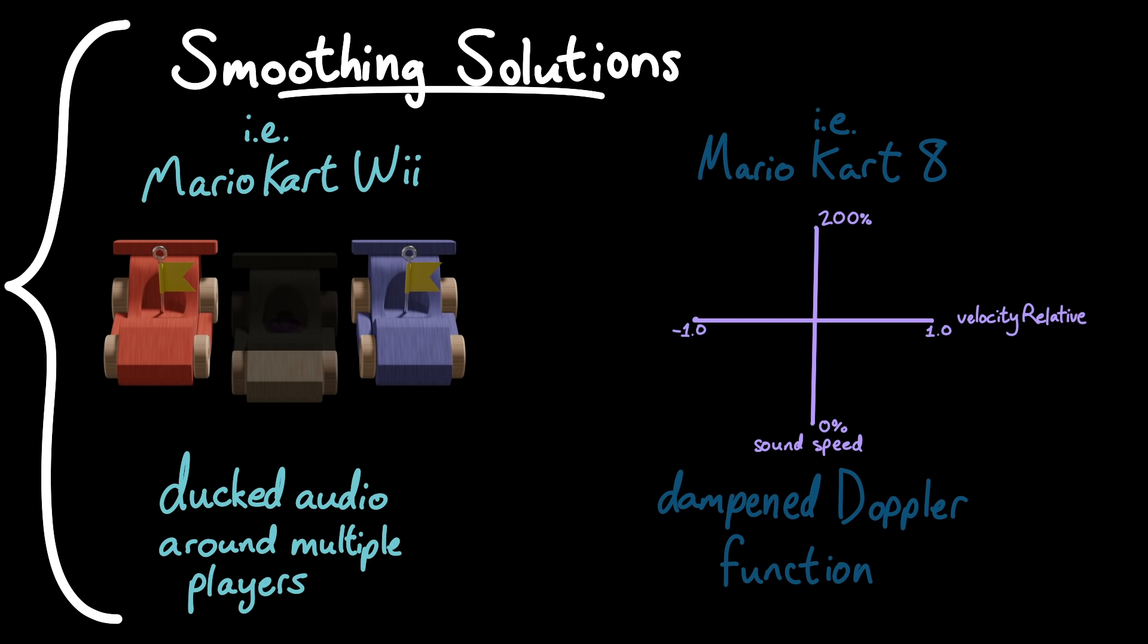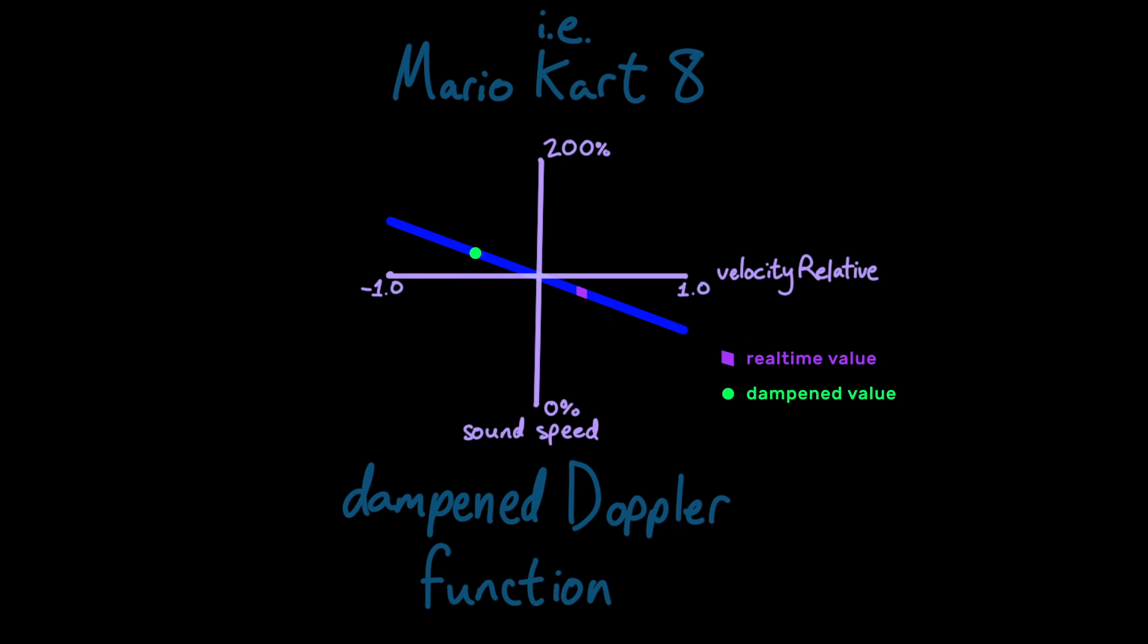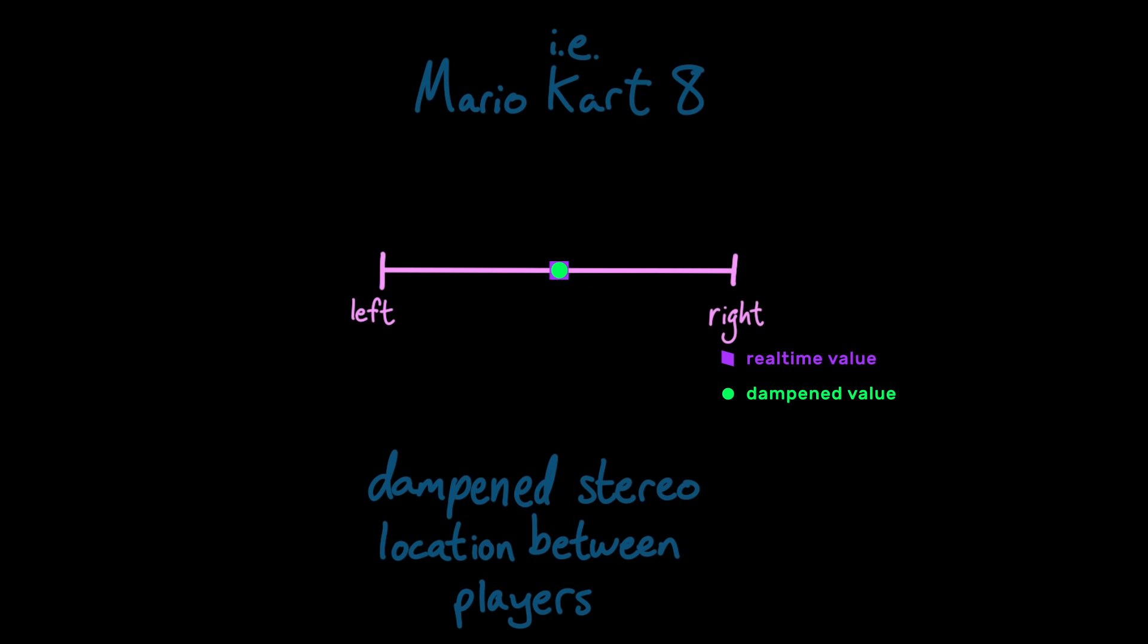In Mario Kart 8, the Doppler effect of one CPU cart has some damping to it, so it takes some time for the sound speed to gradually get to where it should be. The same damping is applied to the cart's stereo position. It gradually shifts from being right of player two to left of player one, and then back.